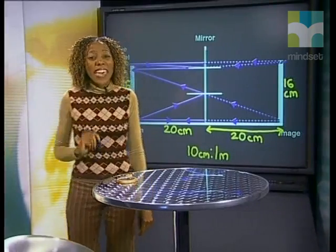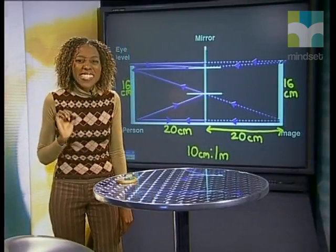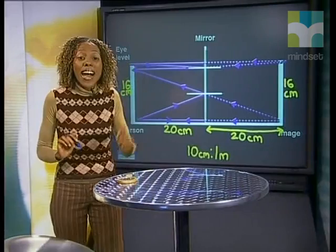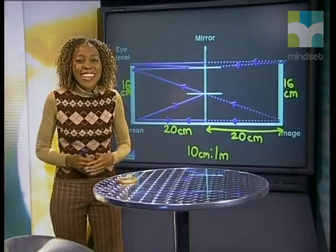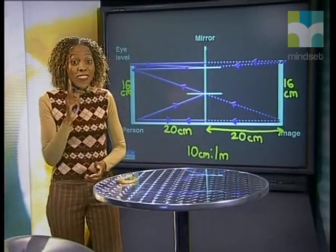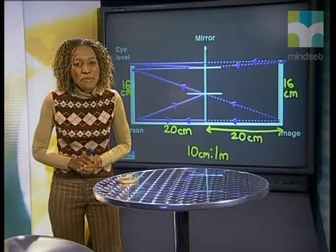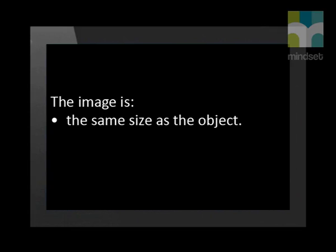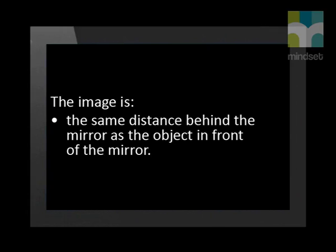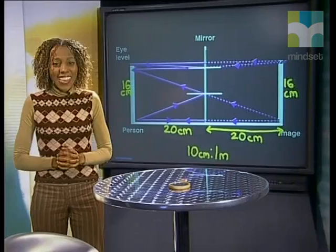That means the image of the person forms the same distance behind the mirror as the person is standing in front of the mirror, and the image is the same size. This diagram confirms two properties of a mirror image: that a mirror image is the same size as the object being reflected, and that the image is the same distance behind the mirror as the object is in front of it.